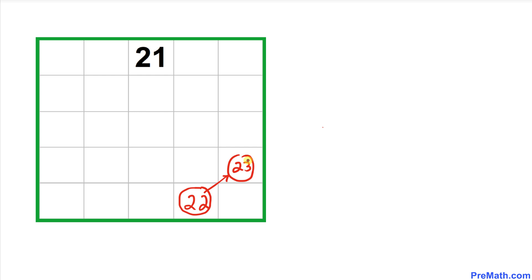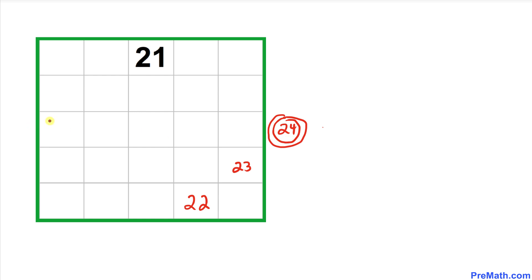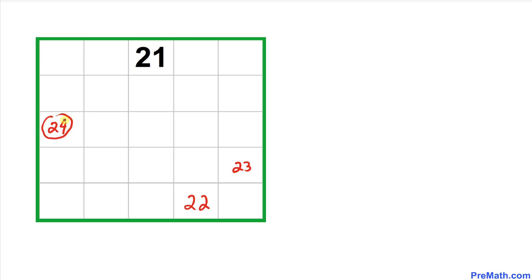Now we move from 22 diagonally to place 23, then diagonally again to 24. Since 24 is also outside the magic square, it wraps to the opposite side. Then from 24 we move diagonally to place 25.